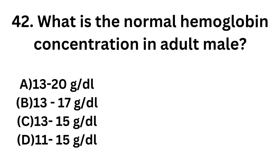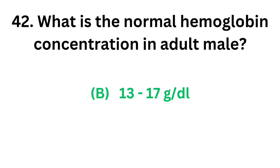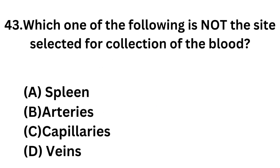Question number 42: What is the normal hemoglobin concentration in adult male? Option A: 13-20 g/dL. Option B: 13-17 g/dL. Option C: 13-15 g/dL. Option D: 11-15 g/dL. The correct answer is option B, 13-17 g/dL. We all know that hemoglobin concentration in males is more than that of females.